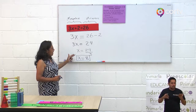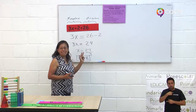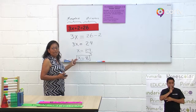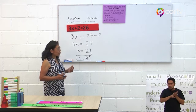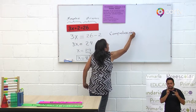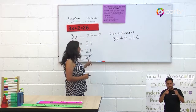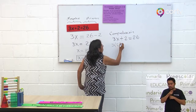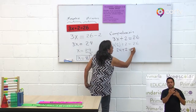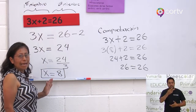¿Cómo vamos a saber que este resultado está correcto? Vamos a hacer la comprobación. Siempre es muy importante hacer la comprobación para saber que el valor de X es correcto. Volvemos a escribir 3X más 2 igual a 26 y en lugar de X ponemos el número 8: 3 por 8 más 2 igual a 26. 3 por 8 es 24; 24 más 2 igual a 26. 26 igual a 26. Está correcto el valor de X.